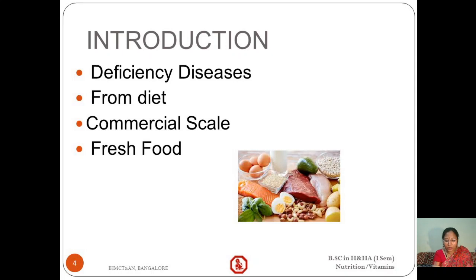All vitamins can be synthesized on a commercial scale, though fresh fruits and fresh foods are always preferred for a proper intake of vitamins. This picture shows vitamin-rich foods like fish, milk, egg, meat, and dry fruits.